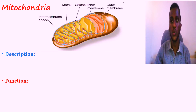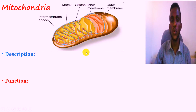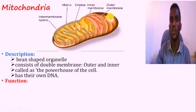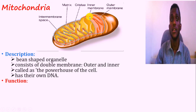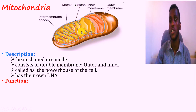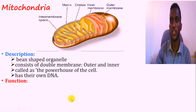The other organelle is mitochondria. The mitochondria is a bean-shaped structure with an outer membrane and inner membrane — also known as a double membrane. The inner membrane folds the whole structure, and there is also the matrix, which is important as the site of aerobic respiration.